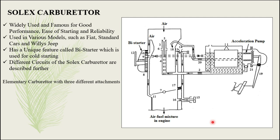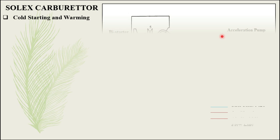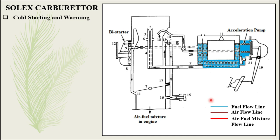The most important thing to remember is that it is an elementary carburetor with three different attachments. The first attachment is called the bias starter. The second attachment is called the idling system, and the third attachment is called the acceleration pump. In order to have better understanding we are using color codes: blue line indicates fuel flow, brown indicates air flow, and red indicates air-fuel mixture flow.